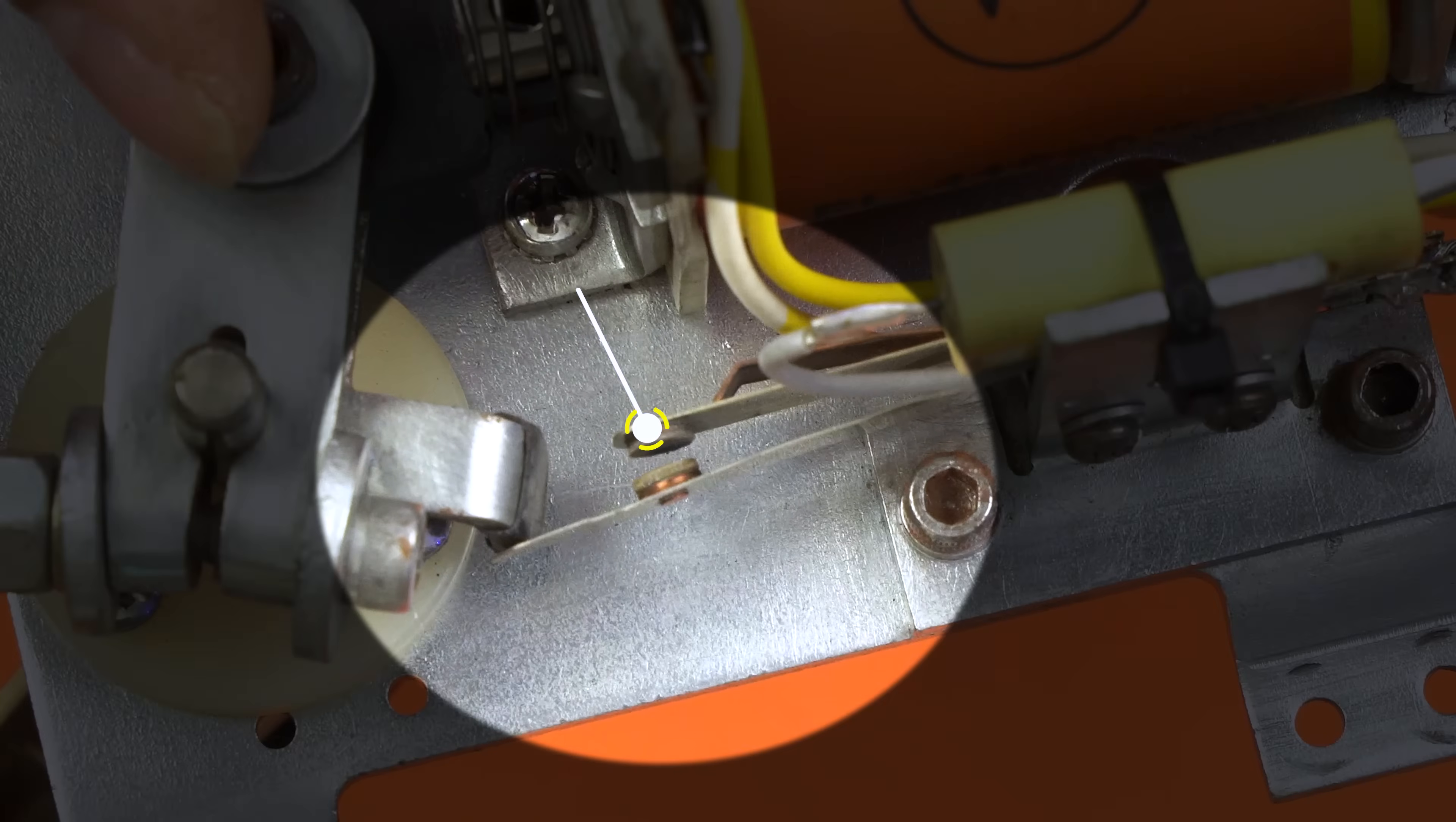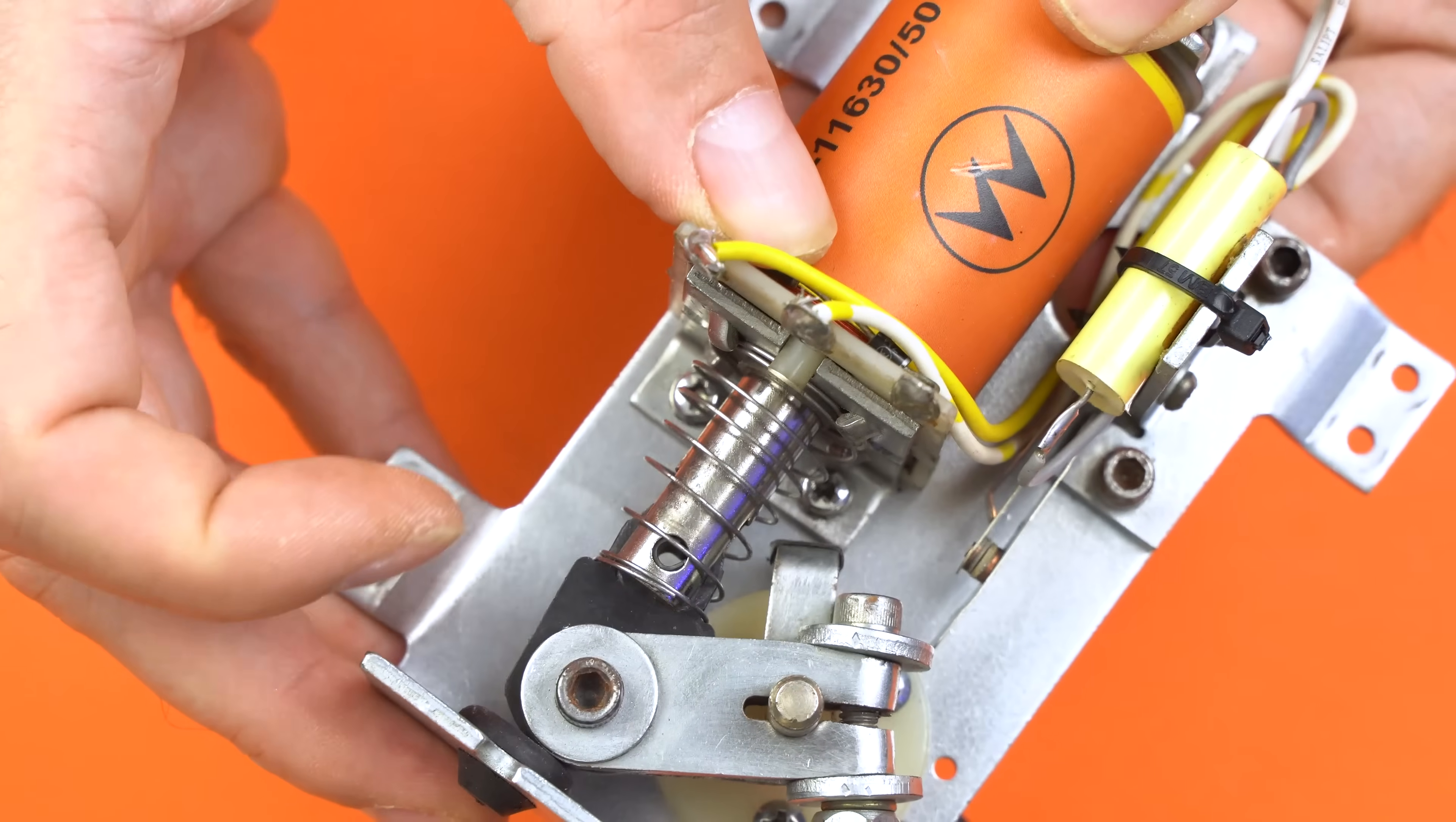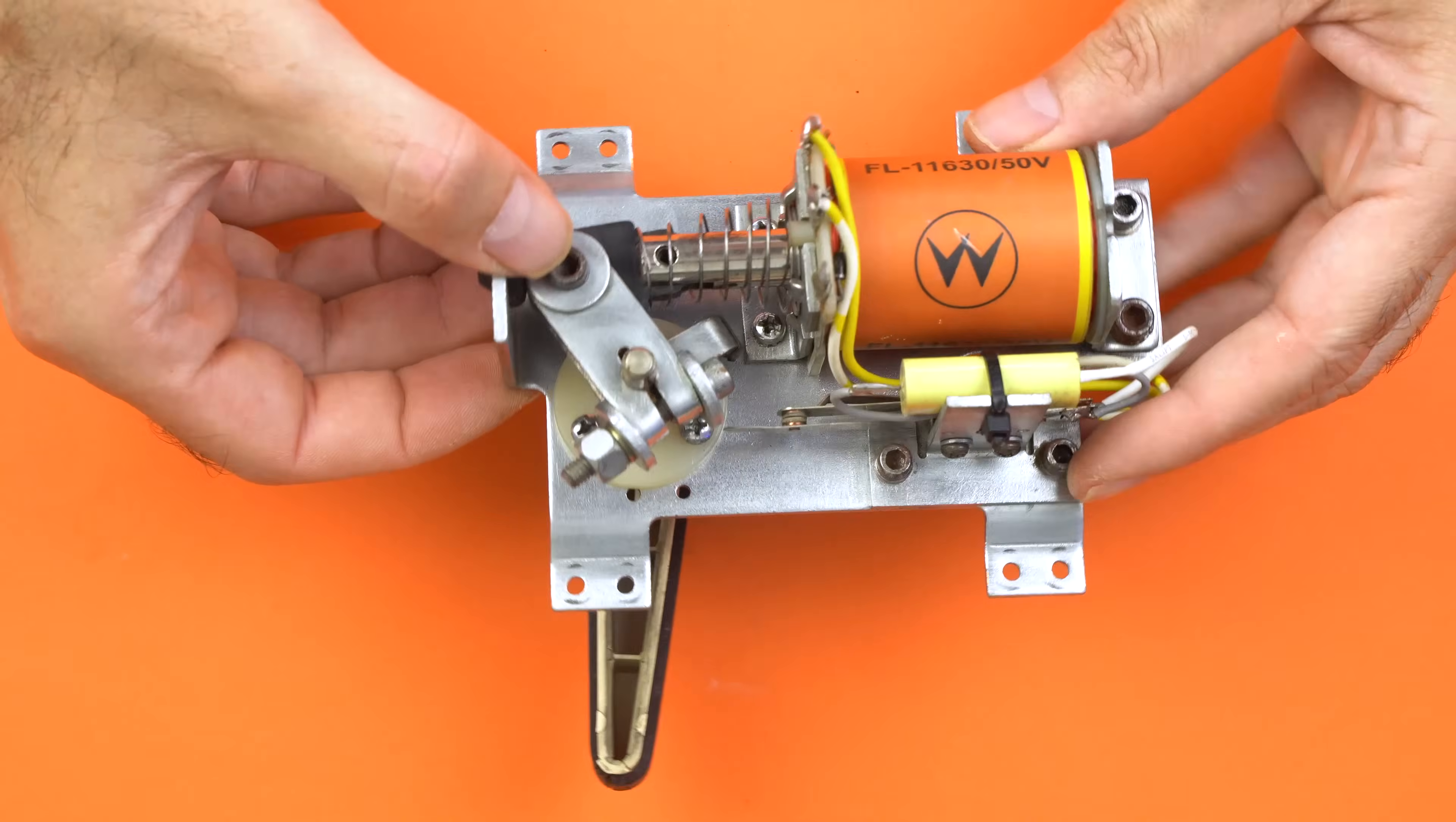Here's the leaf contact. It diverts the current from the power coil to the hold coil when the flipper reaches its maximum stroke. Without this system, the coil would stay fully energized, quickly overheating and burning out the winding insulation. And this is the maximum opening angle. This small rubber pad helps dampen the return click.